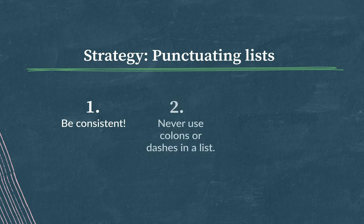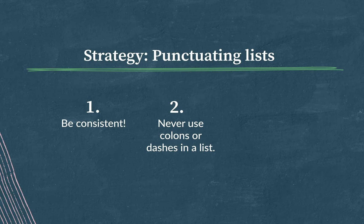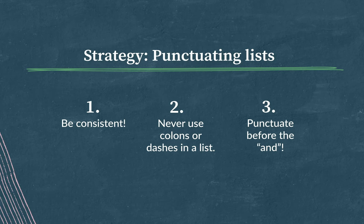Second, never use colons or dashes in a list. Commas and semicolons are the only punctuation marks we use to punctuate a list, so you can knock out any other punctuation that you see. Colons can introduce lists, but they can't separate the elements in a list. And third, the punctuation comes before the 'and' — any list of three or more requires an 'and' or 'or,' and the punctuation mark comes before it, not after.